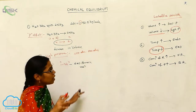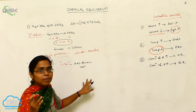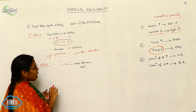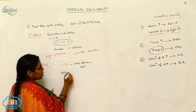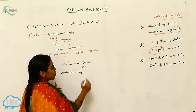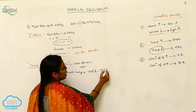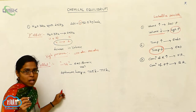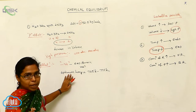At low temperature, the speed and rate of the reaction decreases. That's why we are using here the optimum temperature — nearly 725 Kelvin to 775 Kelvin. At low temperature, the reaction should be slow, so that's why we are using the optimum temperature.